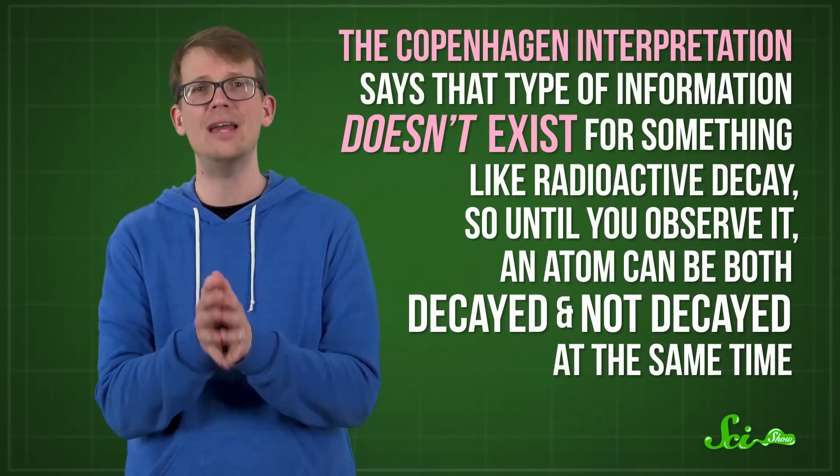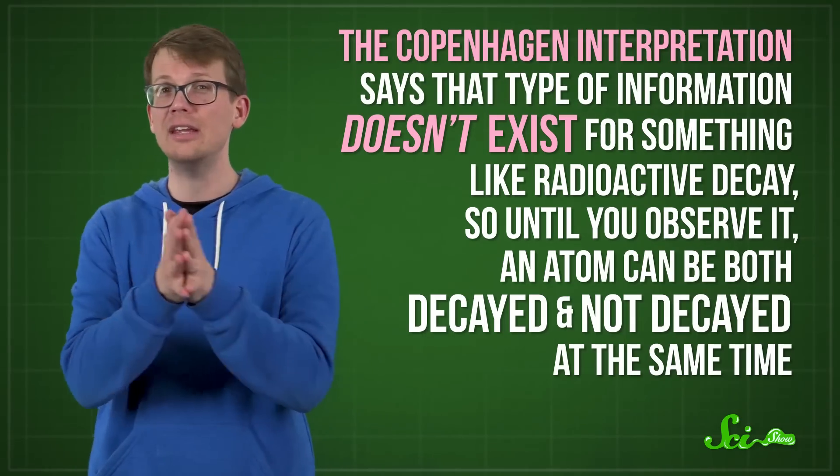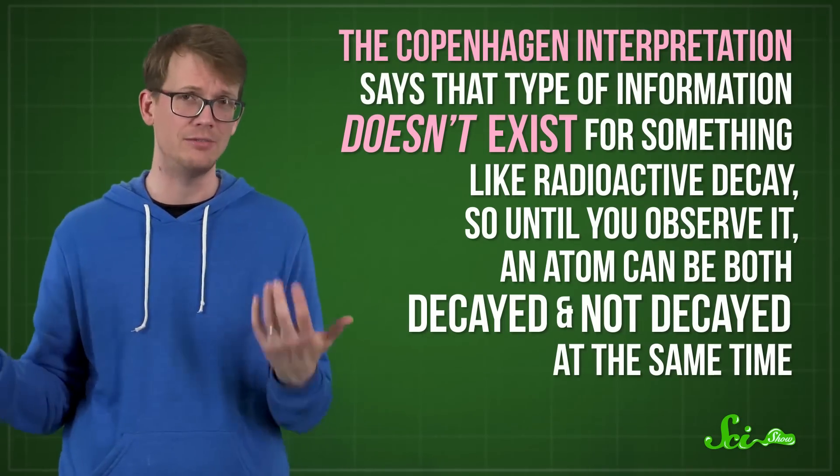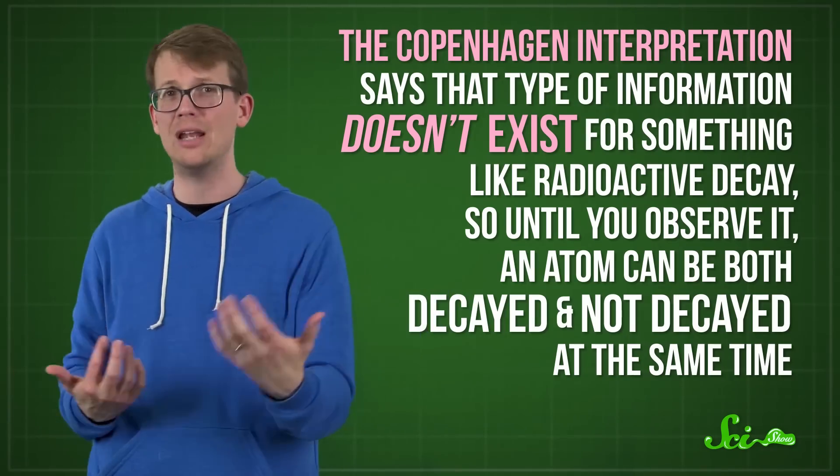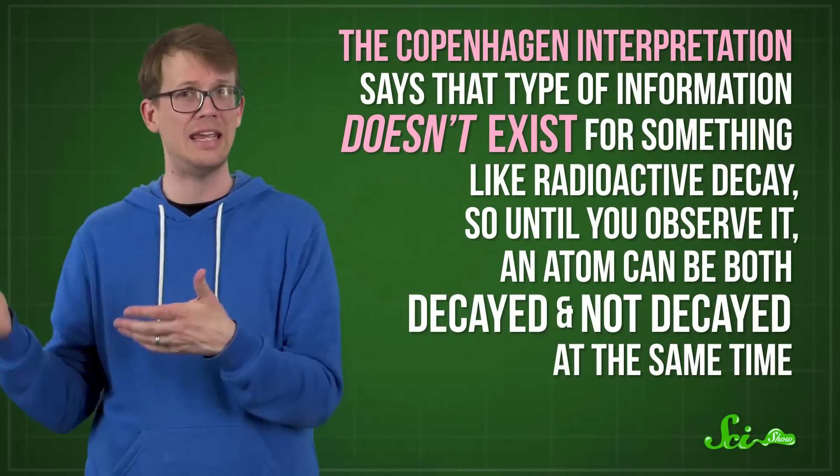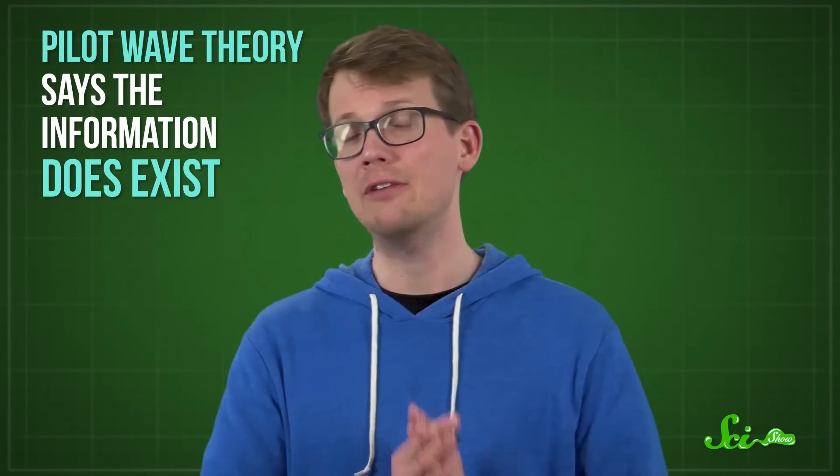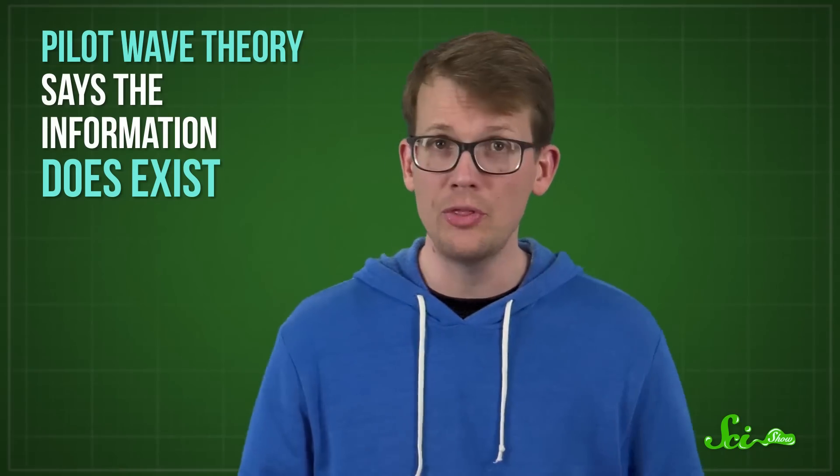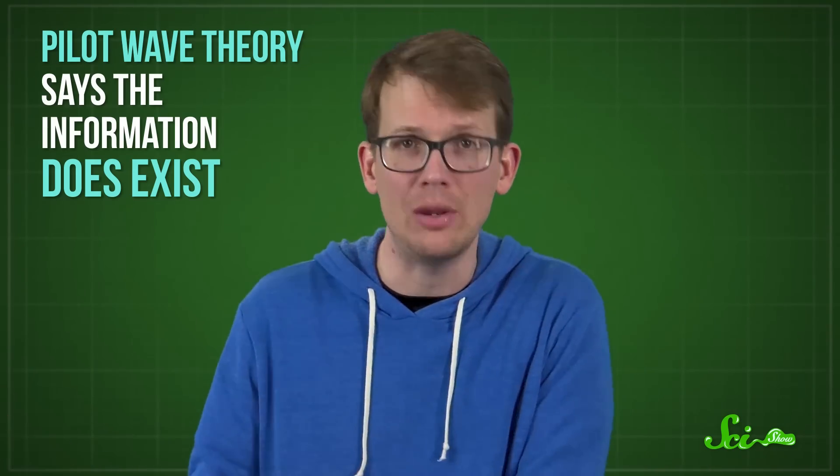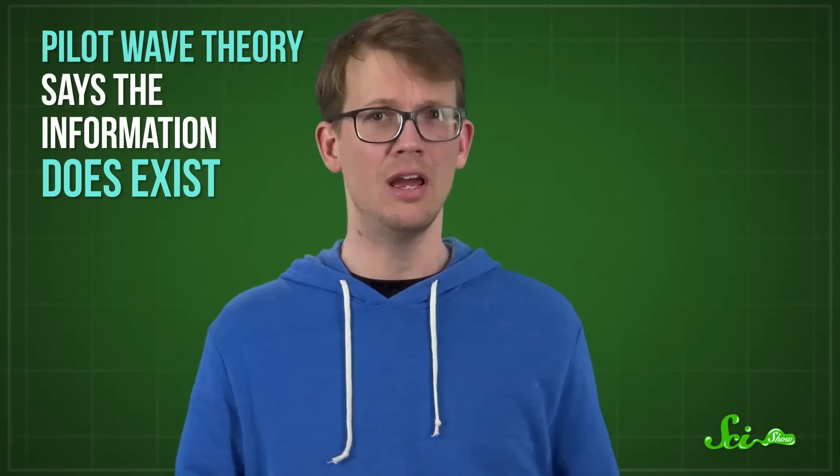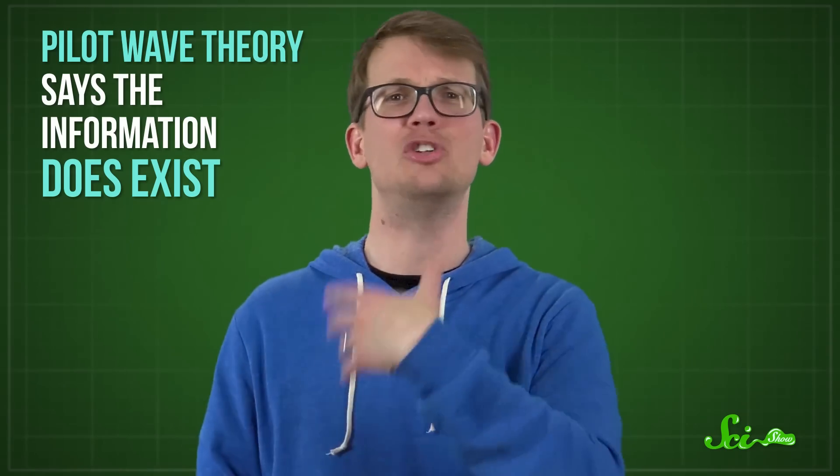The Copenhagen interpretation says that that type of information doesn't exist for something like radioactive decay. So until you observe it, an atom can be both decayed and not decayed at the same time, and Schrödinger's cat can be both alive and dead. Pilot wave theory says the information does exist. Like with the coin, you may not have access to the knowledge that would tell you whether the atom has decayed. So on a practical level, we can't use the math to figure it out. But the information is out there, and the atom is one or the other, not both. That's a little closer to how we perceive reality in everyday life, so that's nice.